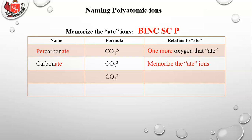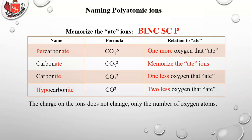If you subtract an oxygen, so it's one less oxygen than ate, that's called carbonite with an I. If you subtract two oxygens from the carbonate, you get CO 2-. That's two less oxygen than the ate and that's called hypocarbonate. The prefix hypo means underneath, like a hypodermic needle is something that goes under your skin. The charge on the ions does not change, only the number of oxygens.